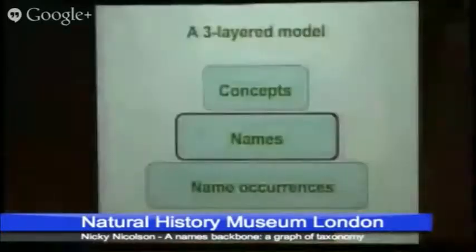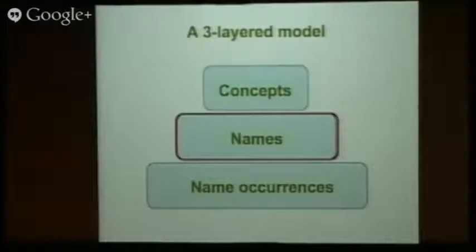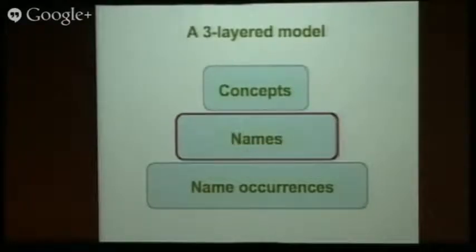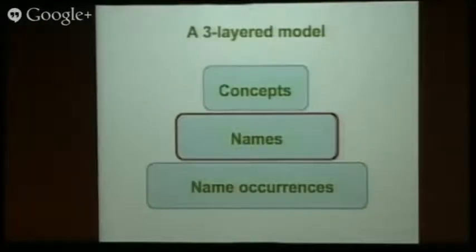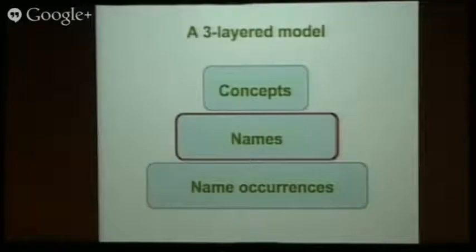I said earlier that I thought this wasn't really an IT project, and I was pretty sure of that at the outset and I'm absolutely convinced of it now. Populating that center layer — the layer of facts, the layer of names — and keeping it meaningfully populated means changing our processes, certainly the processes we operate on at Kew. But other people can use our kinds of workflows too. So we need to collaboratively build an authoritative set of names, and then we can make those available so that we can build a graph of concepts.